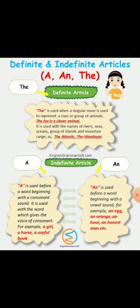The is used when a singular noun represents a class or group of animals, like the fox is a clever animal. It is used with the names of rivers, seas, oceans, groups of islands, and mountain ranges, as in the Atlantic, the Himalayas, etc.